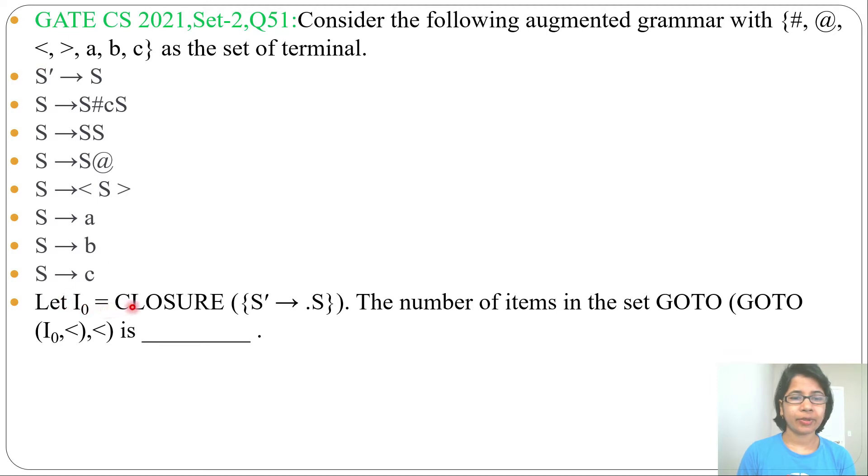Let I0 equal to closure of S' derives dot S. The number of items in the set GOTO of GOTO(I0, less than symbol), then again less than symbol. So it is asking how many items will be in GOTO of GOTO(I0, less than symbol), again less than symbol.